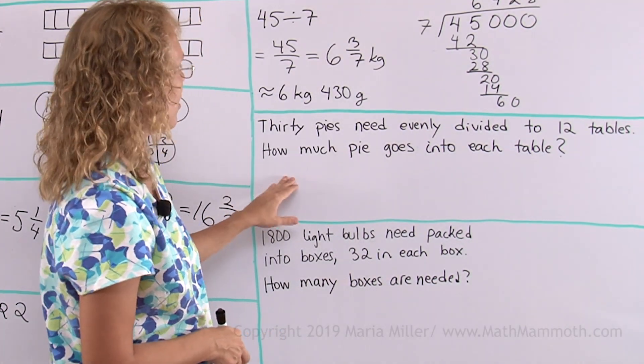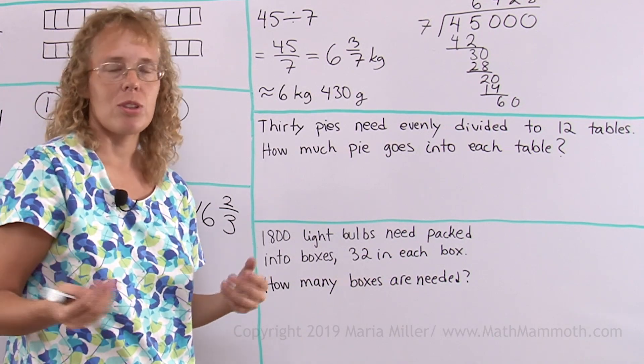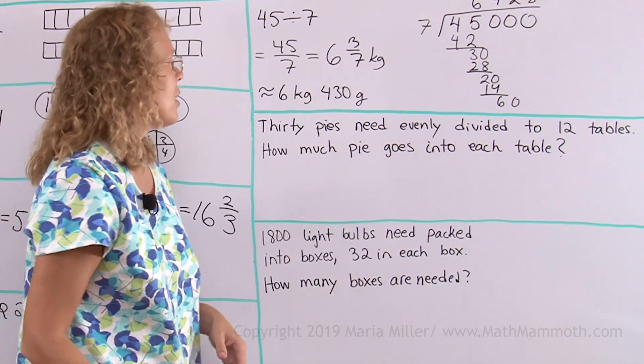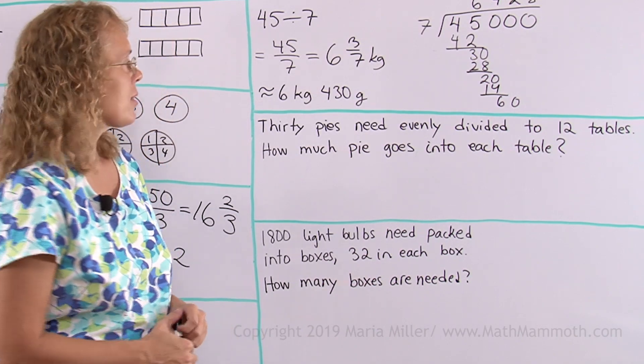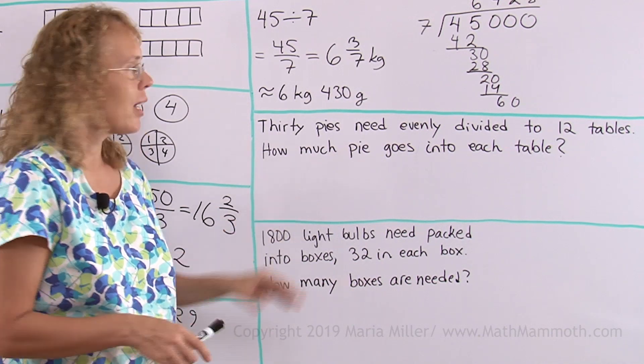Now, 30 pies need evenly divided to 12 tables. Maybe you're a cook, maybe on a cruise ship or something, there's tons, lots of tables. You need to put pies into them and so your crew made 30 pies. How much pie goes into each table? It's not going to go evenly, okay?